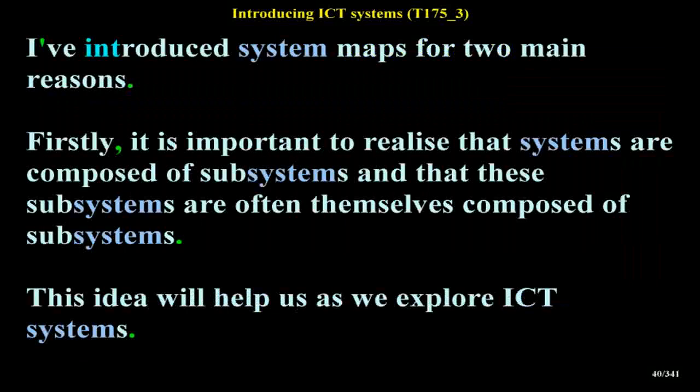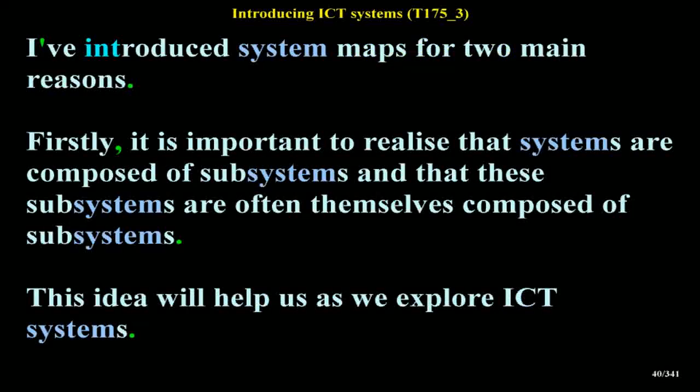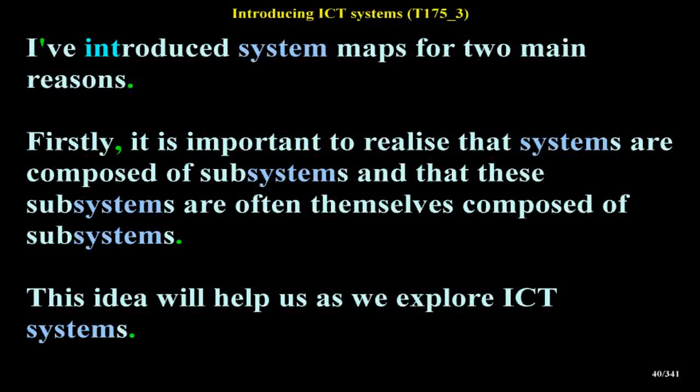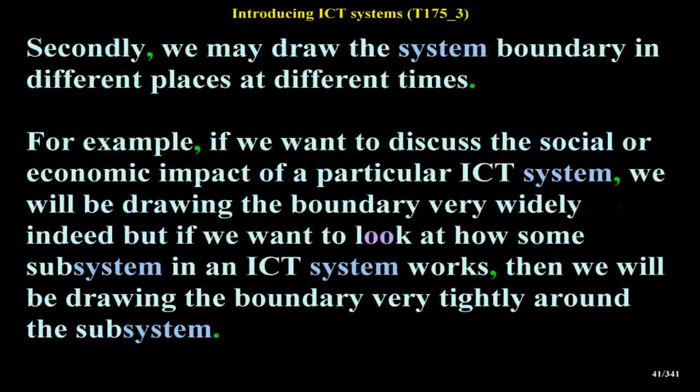I've introduced system maps for two main reasons. Firstly, it is important to realize that systems are composed of subsystems and that these subsystems are often themselves composed of subsystems — this idea will help us as we explore ICT systems. Secondly, we may draw the system boundary in different places at different times. If we want to discuss the social or economic impact of a particular ICT system, we will be drawing the boundary very widely. But if we want to look at how some subsystem works, we will be drawing the boundary very tightly around that subsystem.